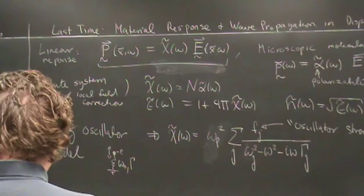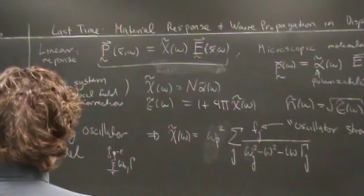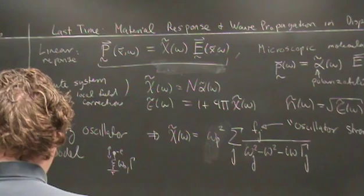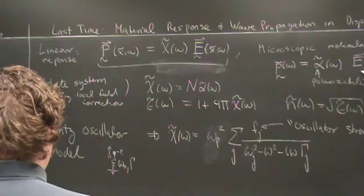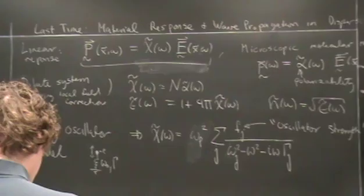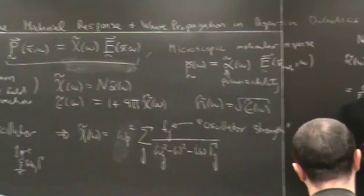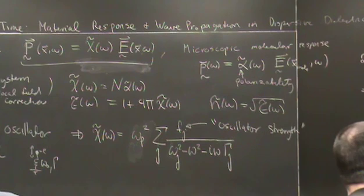We can model this by thinking about the molecular constituents in the material, for which there is some molecular polarizability, such that the response amplitude at a given frequency is proportional to the electric field amplitude at that frequency—this is called the polarizability. The relationship between chi and alpha is generally fairly complicated because of so-called local field corrections.